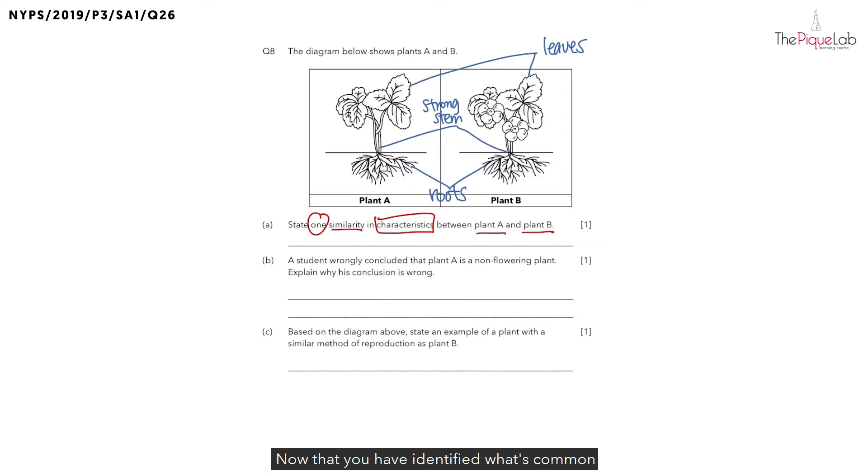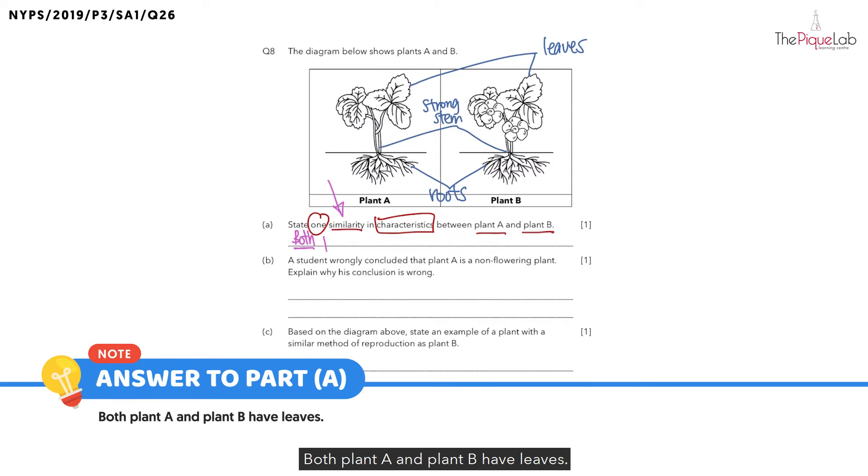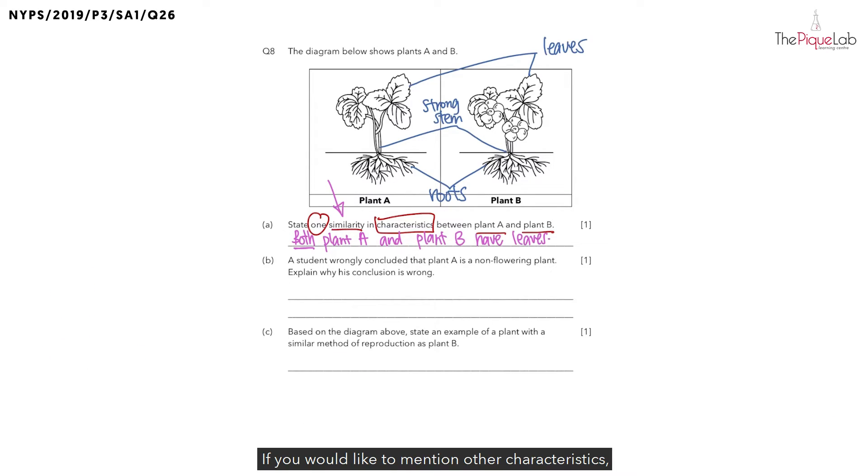Now that you have identified what's common between the two plants, let's now try to phrase our answer. I have always taught my students that whenever the question asks you for similarity, there is an important keyword that you have to include in your answer. Do you know what that keyword is? That keyword is the word both. So this is how you can phrase your answer. Both plant A and plant B have leaves. If you would like to mention other characteristics, like the strong stem or the roots, that will be acceptable as well.